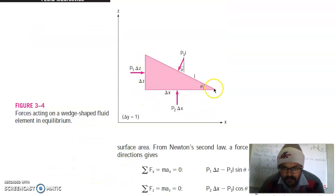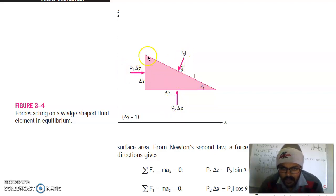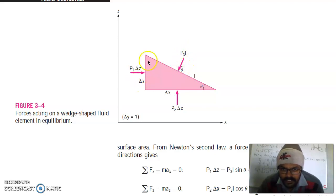This is your wedge-shaped fluid element. From the downward side, P2 pressure is applied. From this side, pressure is P1, and from the inclined wedge surface, the pressure is P3. This height is ΔZ, this horizontal distance is ΔX, and ΔY is taken equal to 1.